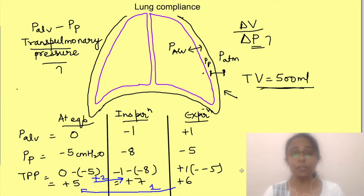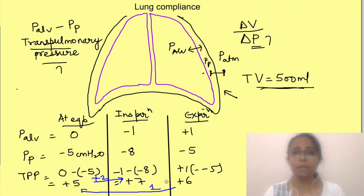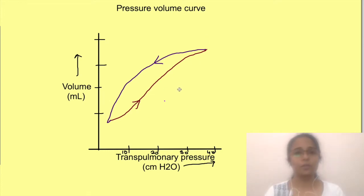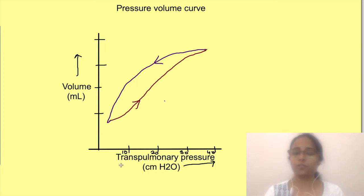For a similar volume change during inspiration and expiration, the pressure changes are different, meaning lung compliance differs between inspiration and expiration. This pressure-volume relationship during inspiration and expiration is expressed using pressure-volume curves. In the graph, the x-axis represents transpulmonary pressure in cmH₂O and the y-axis represents volume change in ml.